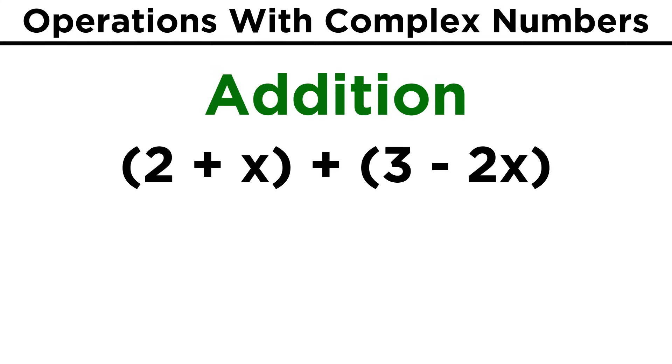We can do operations with complex numbers just like we would if i was some variable like x. If we had the quantity two plus x plus the quantity three minus two x, we would add the numbers together to get five, and add the x's together to get negative x.